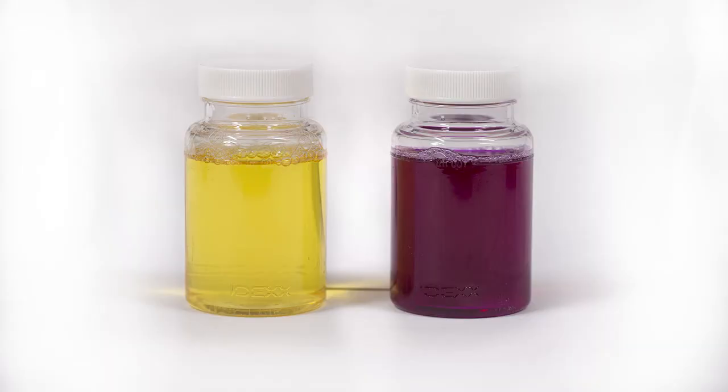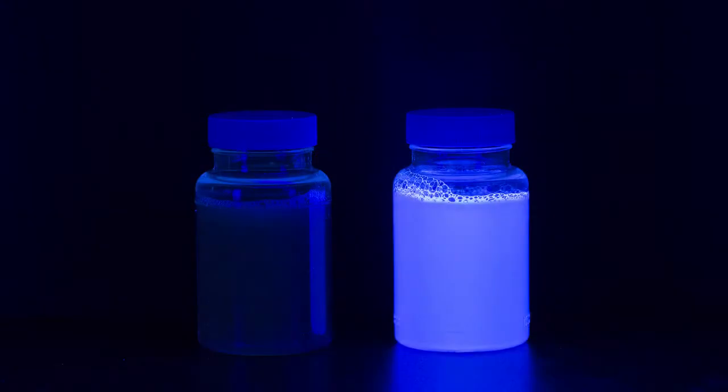After 24 hours of incubation, if the sample is magenta, it is positive for total coliforms. If the sample is magenta, determine E. coli results by shining an ultraviolet lamp on the sample in a dark environment, shining the light away from your eyes. Keep the light within 5 inches of the vessel. If the sample fluoresces, it is positive for E. coli.